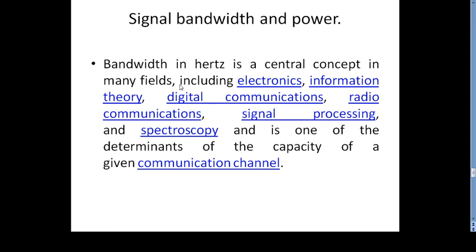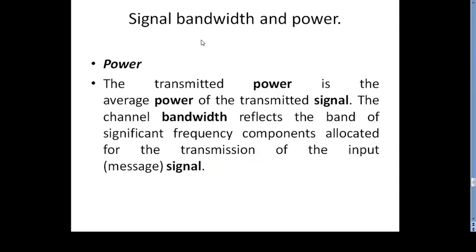Bandwidth in hertz is a central concept in many fields including electronics, information theory, digital communication, radio communication, signal processing, and spectroscopy. It is one of the factors that determines the capacity of a given communication channel. The transmitted power is the average power of the transmitted signal. The channel bandwidth reflects the band of significant frequency components allocated for the transmission of the input message signal. Power defines how much signal will be transmitted from transmitter to receiver, and how much power is consumed in relation to the bandwidth.